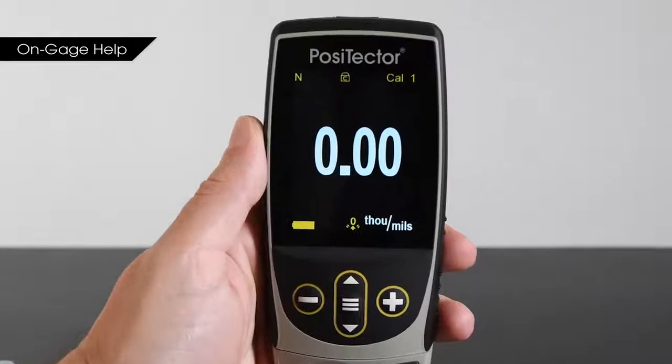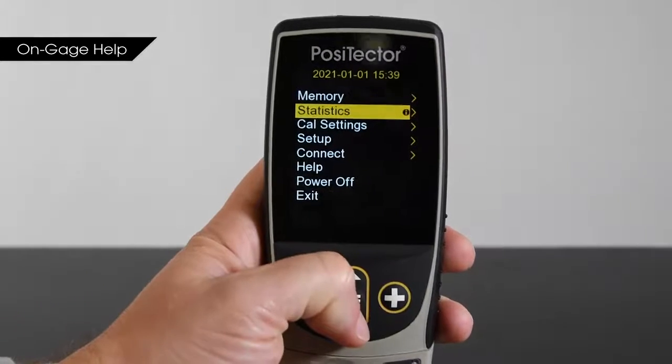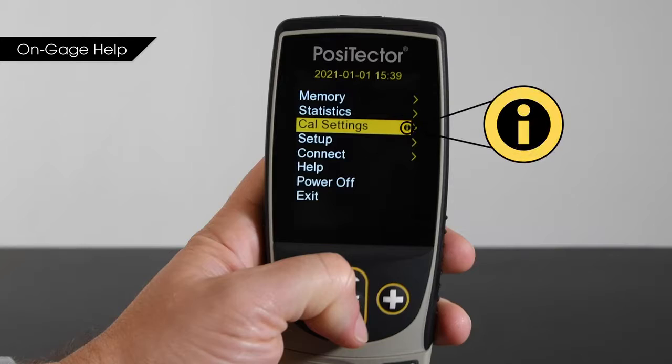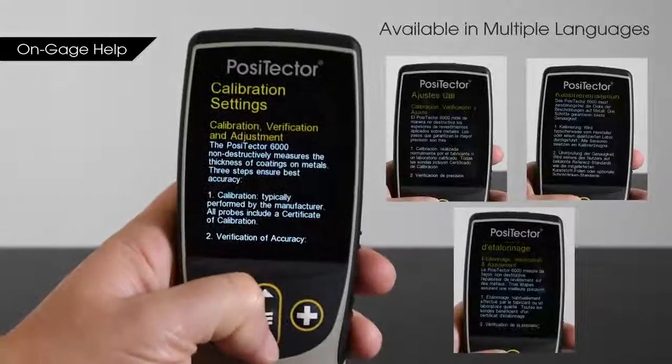On-gauge help makes operation even easier for new and experienced users alike. Nearly every menu item has a help icon. Simply touch it or press the plus button to get a full explanation of its function.